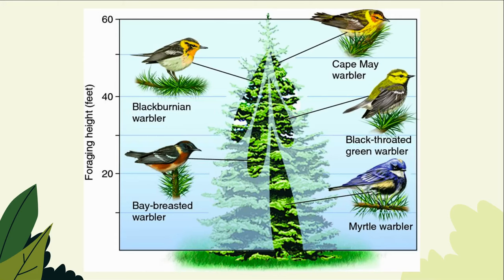On this next slide we get a better understanding of niche through the example of warbler birds. The habitat is a tree, and on this tree exist different warbler birds — a Blackburnian, a Cape May, a Black-throated, a Myrtle, and a Bay-breasted warbler — all living at different heights within the trees. Imagine if all the birds lived in one location; they would all be in direct competition with each other and would all have the same niche.